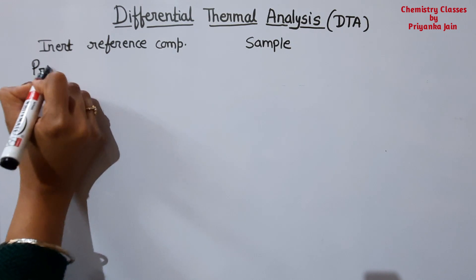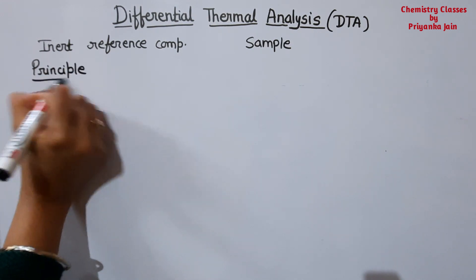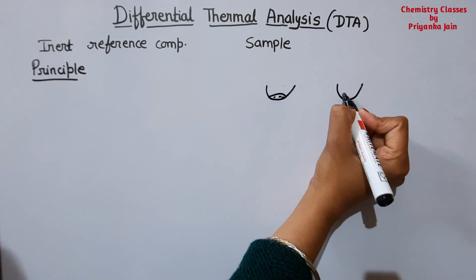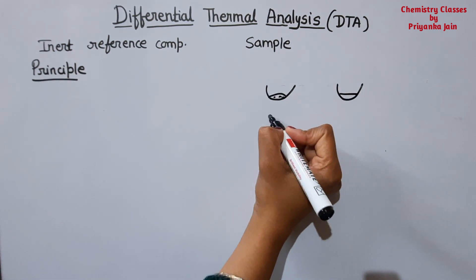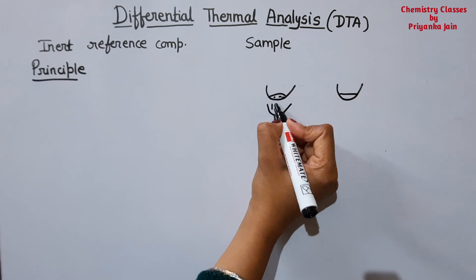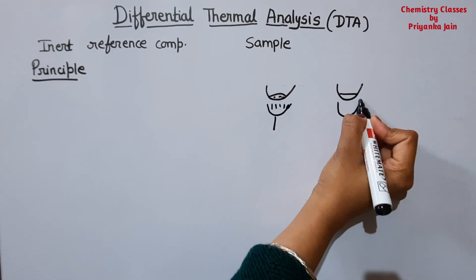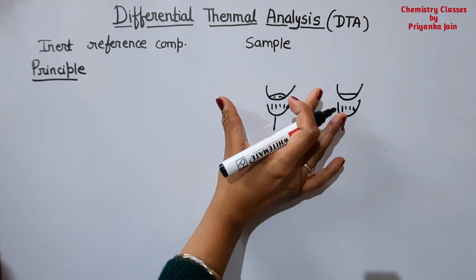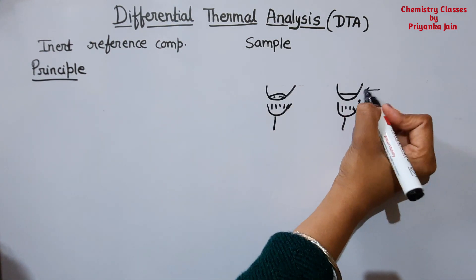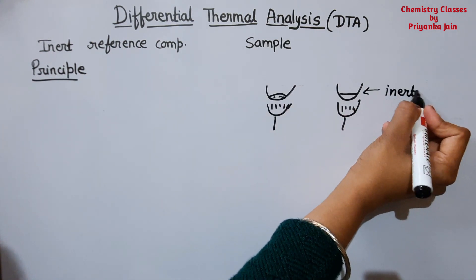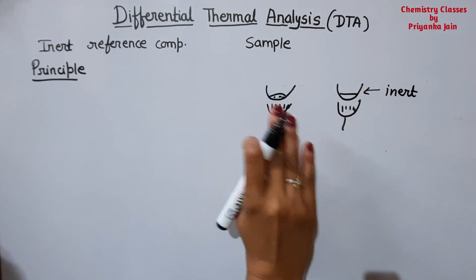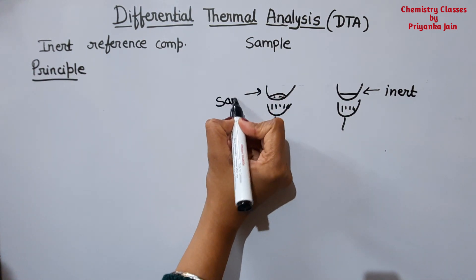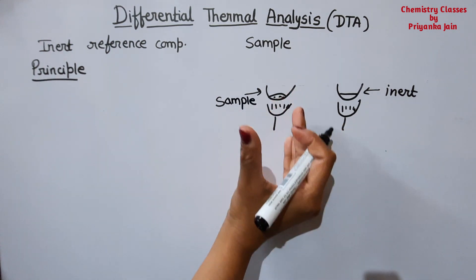Let's see the general principle. Here we have a sample and the inert reference compound. Both of them are being heated — suppose this is the burner — and both of them are heated. Their temperature will increase. The reference compound is inert, so throughout the whole process it will not undergo any physical or chemical change, but this is our sample.